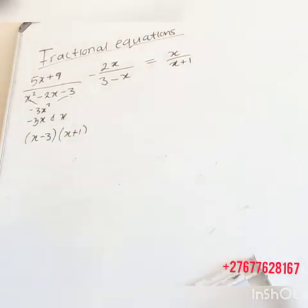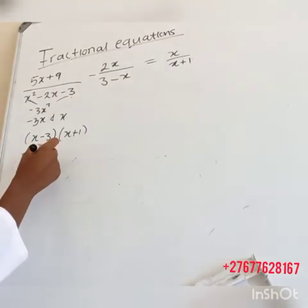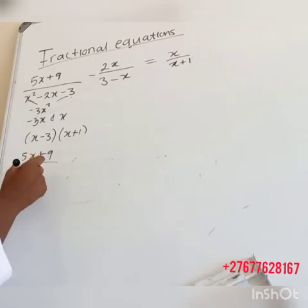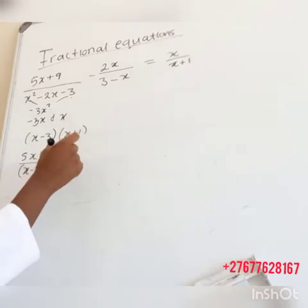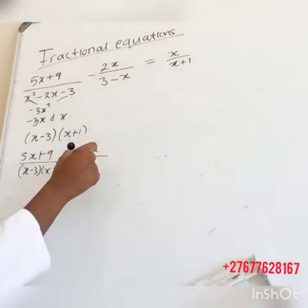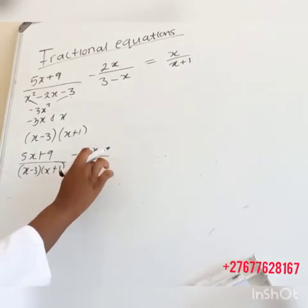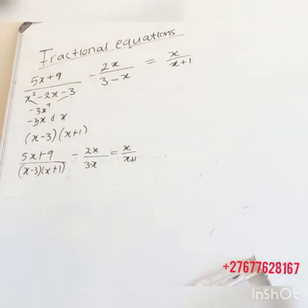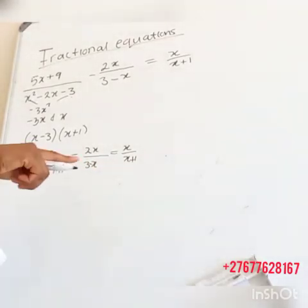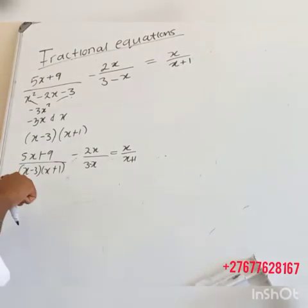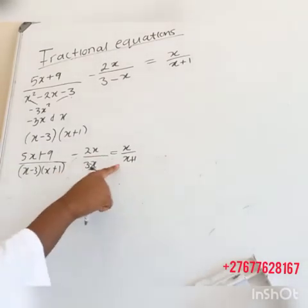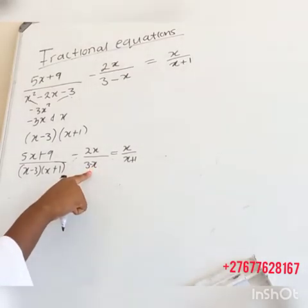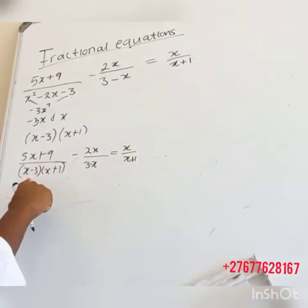So now the first fraction is going to be 5x plus 9 over (x minus 3)(x plus 1), minus 2x over 3 minus x, equal to x over x plus 1. Now the second step, we are going to multiply by the common denominator. As we can see, it's (x minus 3)(x plus 1) on this side, and 3 minus x on the other. Notice that 3 minus x and x minus 3 are opposites.